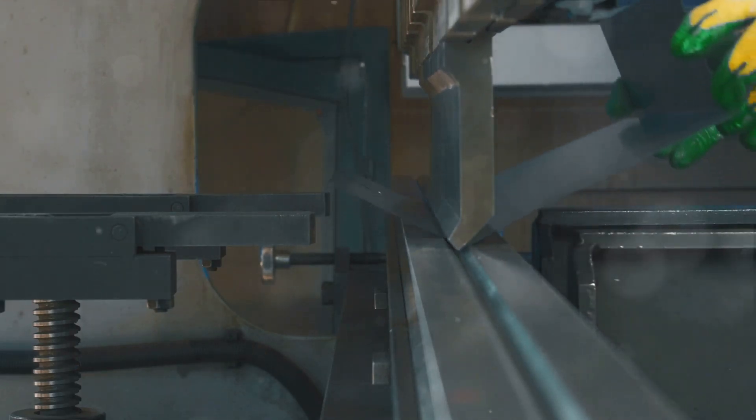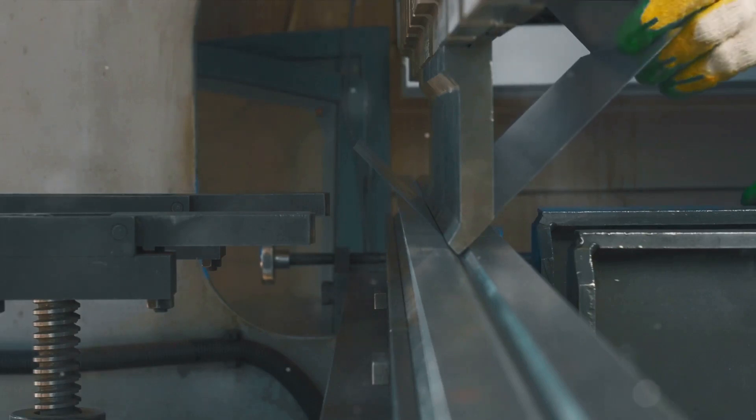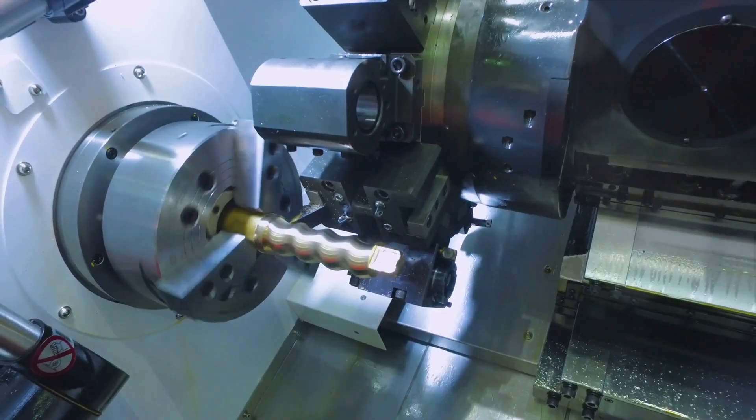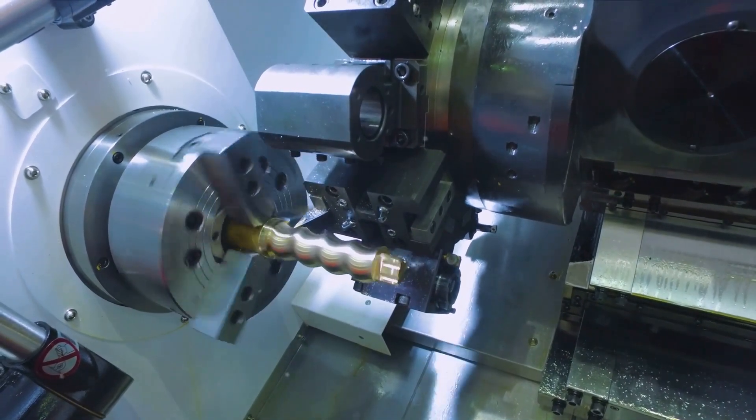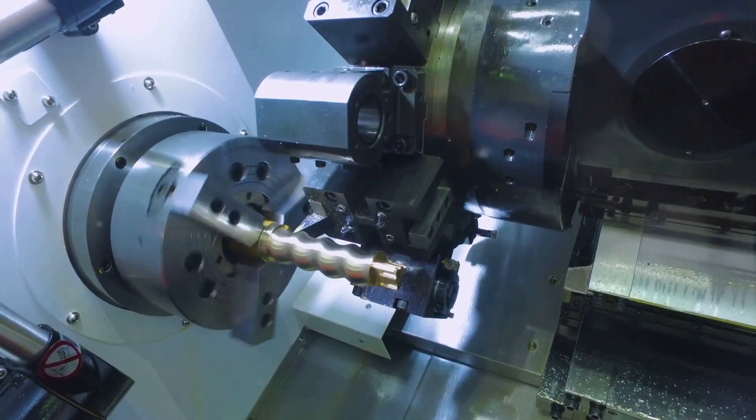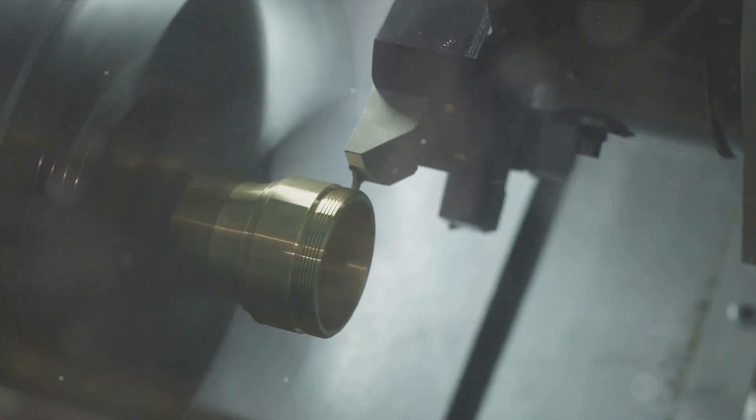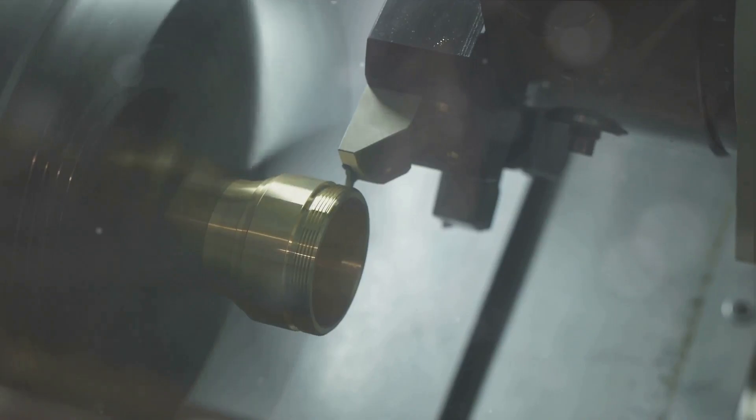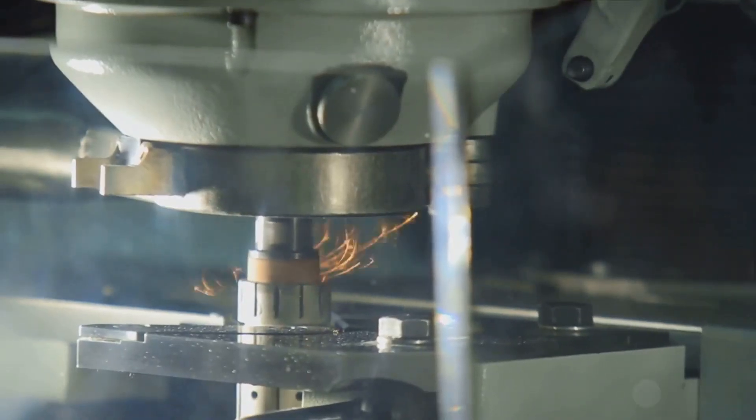There are three main types of knurling: straight, diagonal, and diamond. Straight knurling creates linear patterns while diagonal knurling results in angled lines. Diamond knurling, as the name suggests, forms a diamond-like pattern. Each type has its own unique applications and aesthetic appeal.